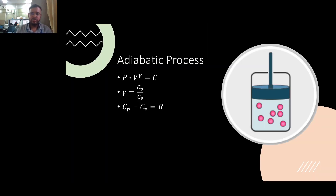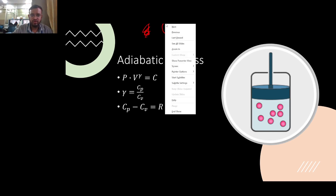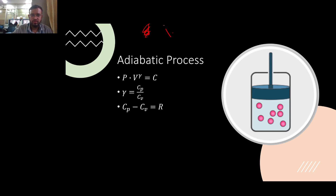Next we explore heat transfer in an adiabatic process. An adiabatic process is a process in which heat transfer is zero. So analyzing it from a first law perspective, Q₁₂ equals zero.